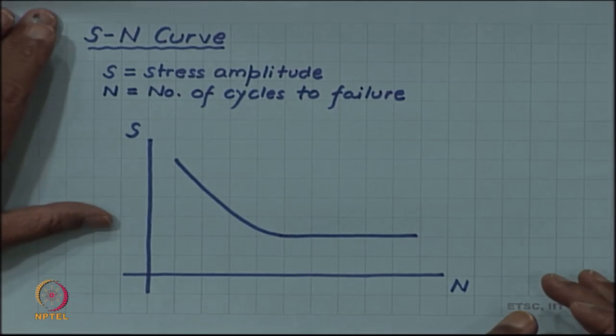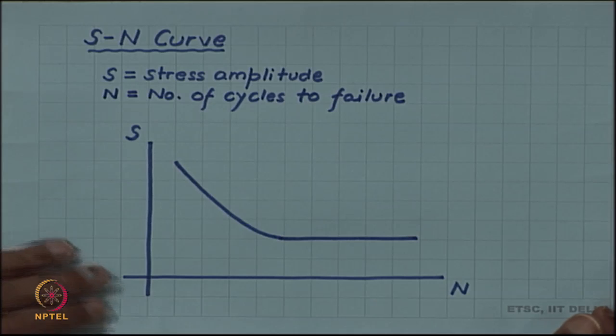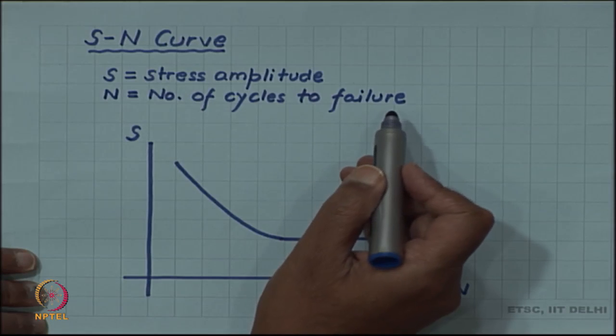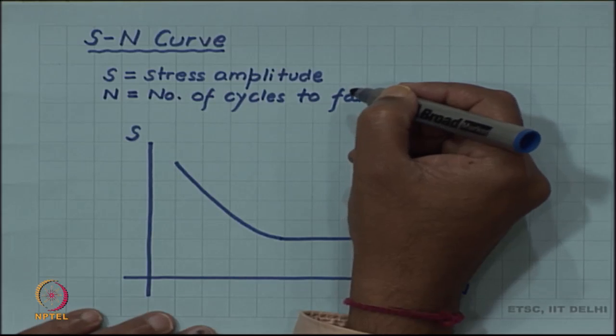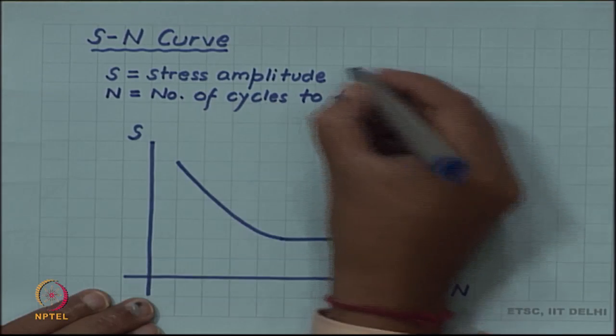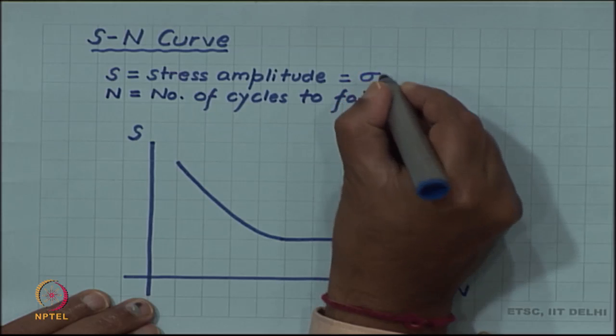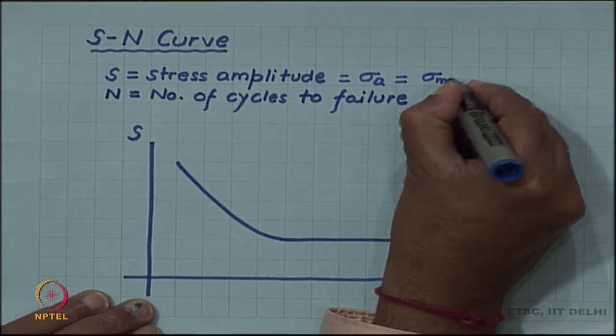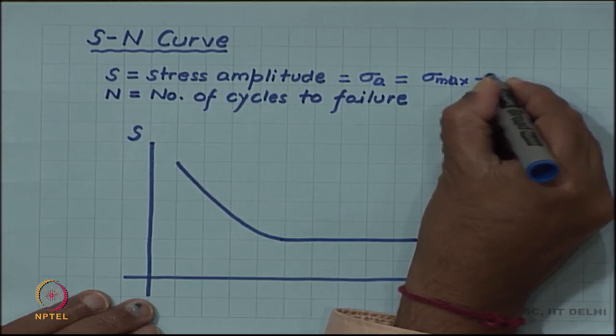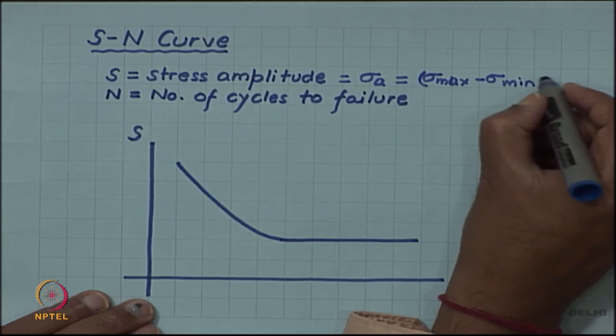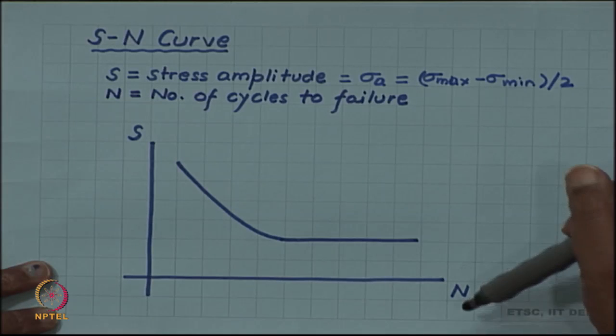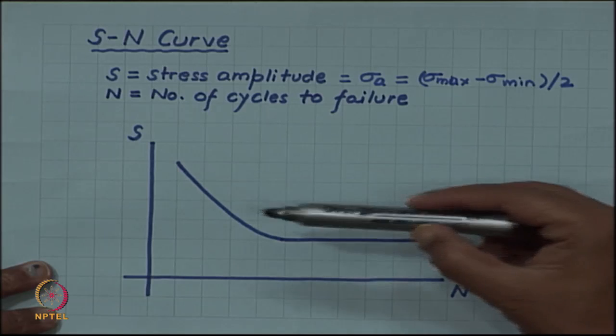The result of a fatigue test - a fatigue test is done by alternating the stress amplitude up to the failure of the component. S gives the stress amplitude which we had denoted by sigma a, amplitude which is sigma max minus sigma min by 2. The result is shown as an S-N curve.